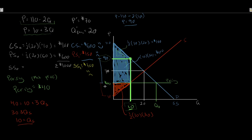New social surplus = $600 + $150 = $750. Society goes from $1,000 down to $750 — society is a loser overall. Our deadweight loss is $250 — the difference between the initial and new social surplus — representing the surplus lost to society due to that government intervention.